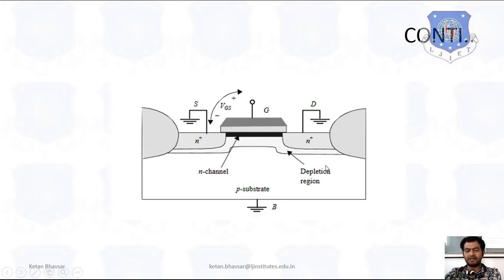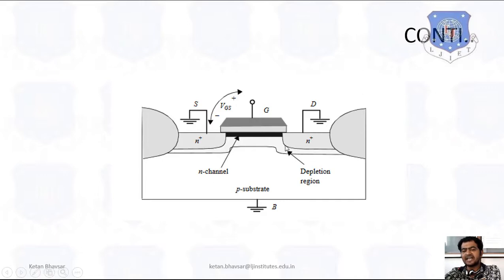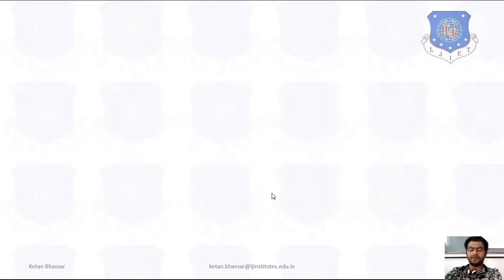When you apply certain voltages, you can see the variation on the diagram showing the drain terminal, source terminal, gate terminal, and body terminal, and also the depletion region formed in that region. We can easily identify how to monitor and observe the variations when the channel is formed.